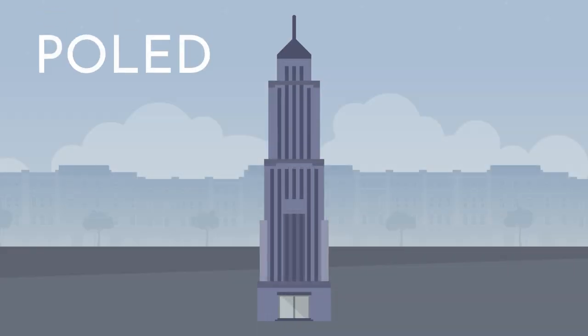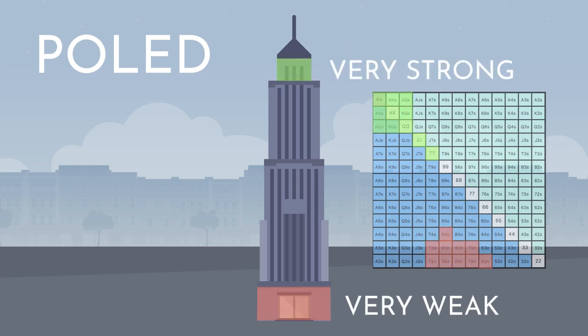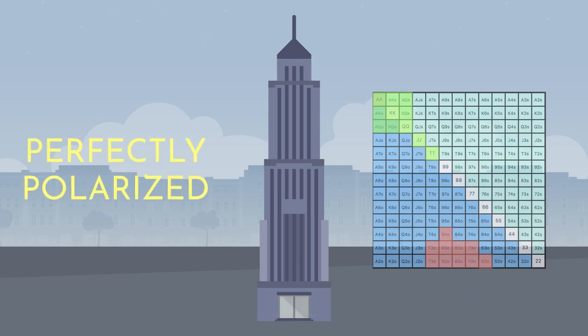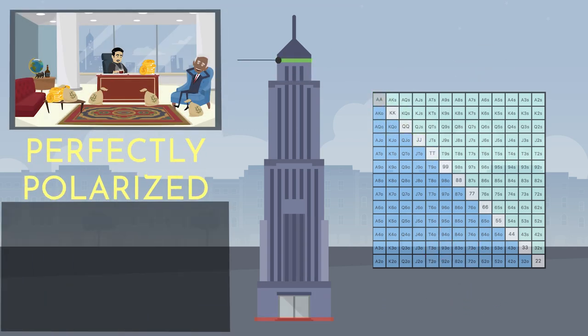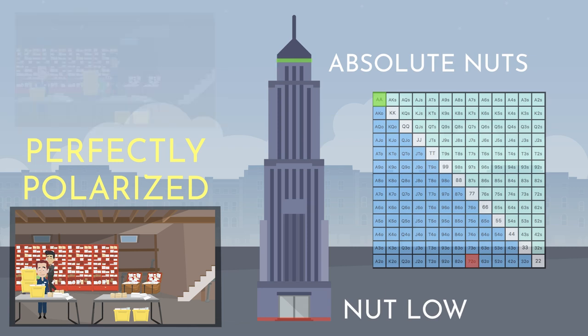Or 'poled,' this simply refers to a range that contains two very specific types of hands: very strong and very weak. If a range is perfectly polarized, it contains exclusively the absolute nuts and the absolute nut low.